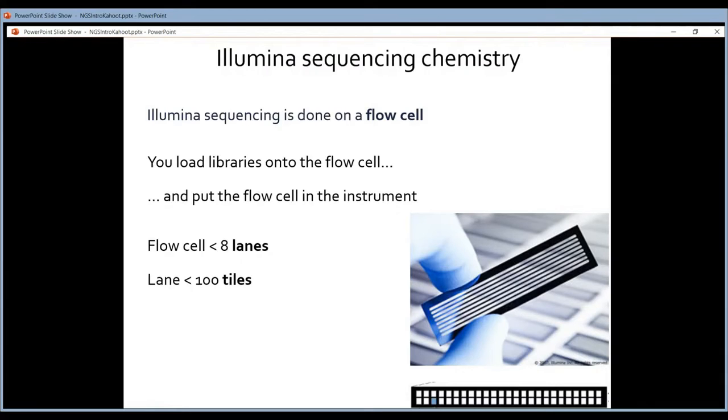So what is a tile? At some point during sequencing, you have a camera that makes pictures of the flowcell. It will make pictures of every lane, but it will only photograph a small part of that lane. The part of the lane that it photographs is called a tile.